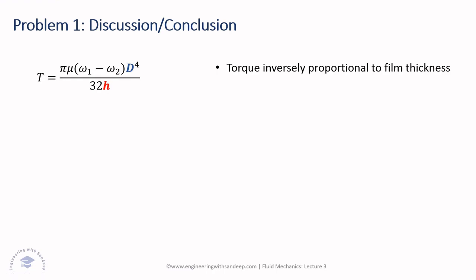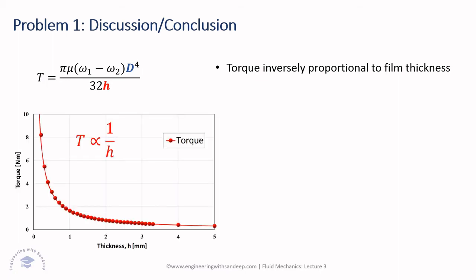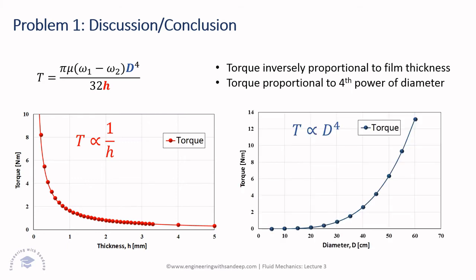What we can conclude from this problem: torque is inversely proportional to thickness h — so maintaining a smaller film thickness gives larger transmitted torque. Also, torque is proportional to the fourth power of the disk diameter D, meaning torque increases dramatically with increasing diameter. These plots are available in an Excel sheet you can download from my website to explore the numbers.